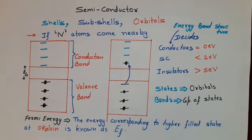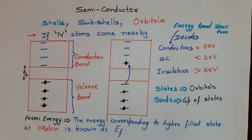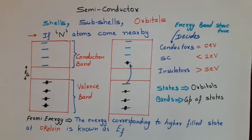Hello friends, welcome back. This is Himanshu Verma and in this video we will study semiconductors and the Hall effect. Semiconductors are those materials which have conductivity more than insulators and less than metals. One more thing about semiconductors is that the conductivity of semiconductors can be modified by adding impurities, and this is the main reason why semiconductors are mostly used in electronics equipment.